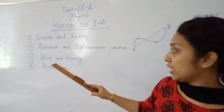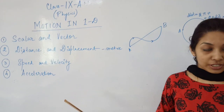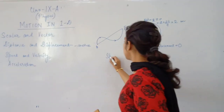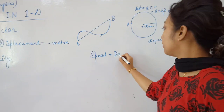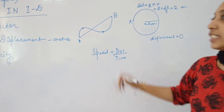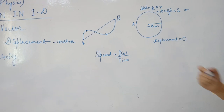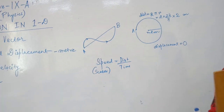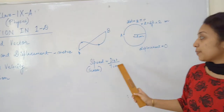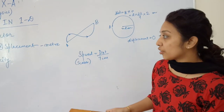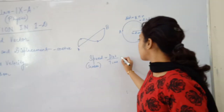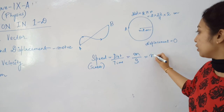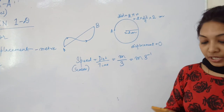Moving to the next subtopic: speed and velocity. The formula for speed is distance divided by time. Since distance is a scalar quantity, speed is also a scalar quantity — it is the distance covered by a body in a specific time. The SI unit of speed is meter per second.